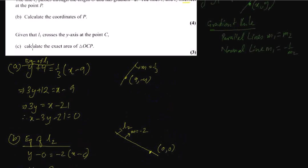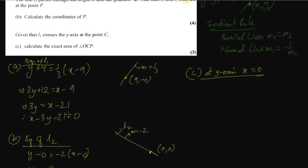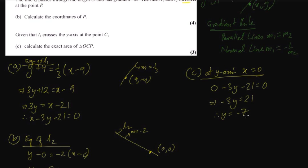In the final question, the line L1 cuts the y-axis at the point C. At the y-axis, x equals 0. Putting x equals 0 into L1: 0 minus 3y minus 21 equals 0, so minus 3y equals 21, therefore y equals minus 7. So the point C is at (0, minus 7).